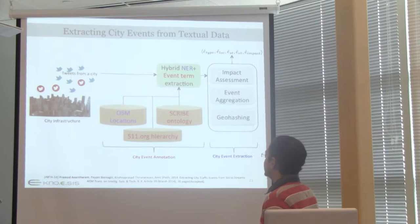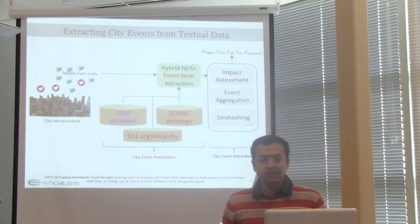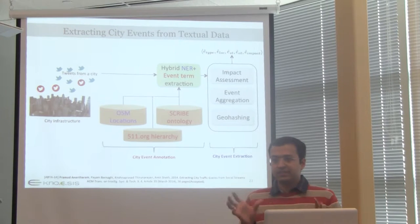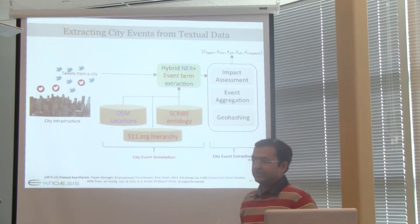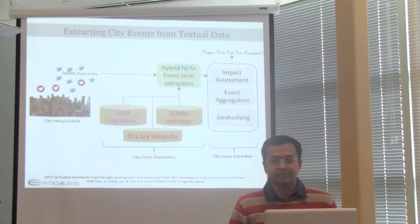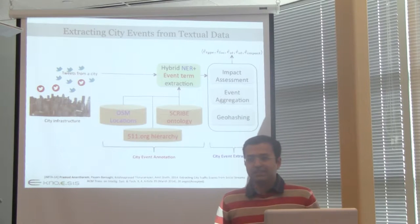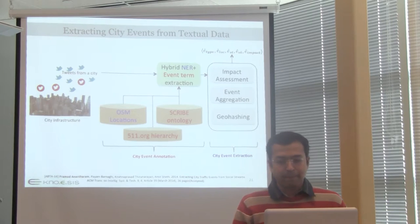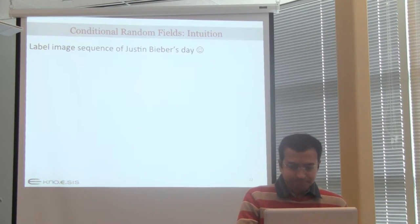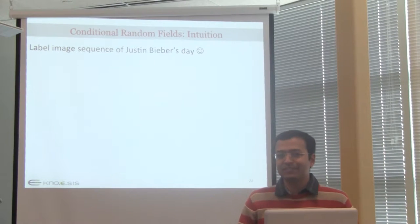Here is the overall architecture for extracting events from textual data. This is part of an ACM Transactions work that just got accepted. There are two parts to this problem. The first is annotation, and the second is extraction. We use a technique called Conditional Random Field to annotate different words in a sentence. Let me give you the intuition for conditional random fields with an example.